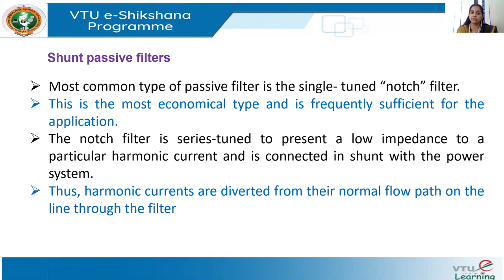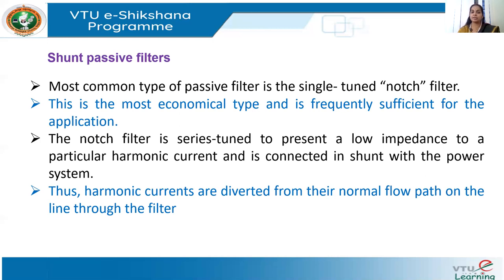Another advantage of shunt passive filters is that they can provide power factor correction in addition to harmonic suppression. So they are used for suppressing a particular harmonic component, and apart from that they have the added advantage of providing power factor correction. If you have a power factor correction capacitor in the circuit, it can also be used as a notch filter by designing the proper value and adding an inductance in series with the capacitance.